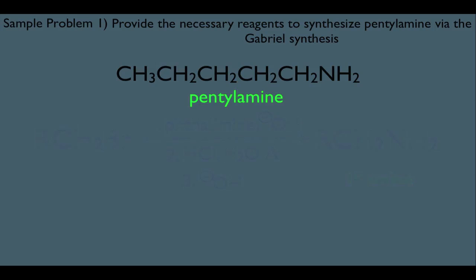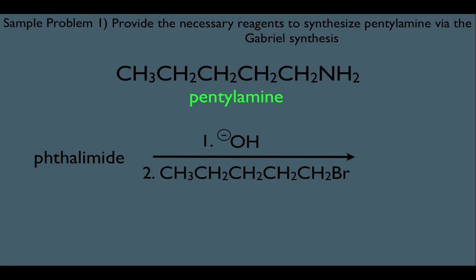So let's put our knowledge to work here. Let's look at a sample problem. Here it says, provide the necessary reagents to synthesize pentylamine via the Gabriel synthesis. Notice we have a 5-carbon amine. And if we're going to use Gabriel synthesis, of course it all starts with the phthalimide. And the first thing we do is add the OH- base, which rips off the hydrogen of phthalimide. And then we're supposed to add our alkyl halide next. But what should our alkyl halide look like? Well, of course, it should be 5 carbons long. And it should have a halogen, of course. Because we know overall in this reaction, we're going to replace that halogen with the amine.